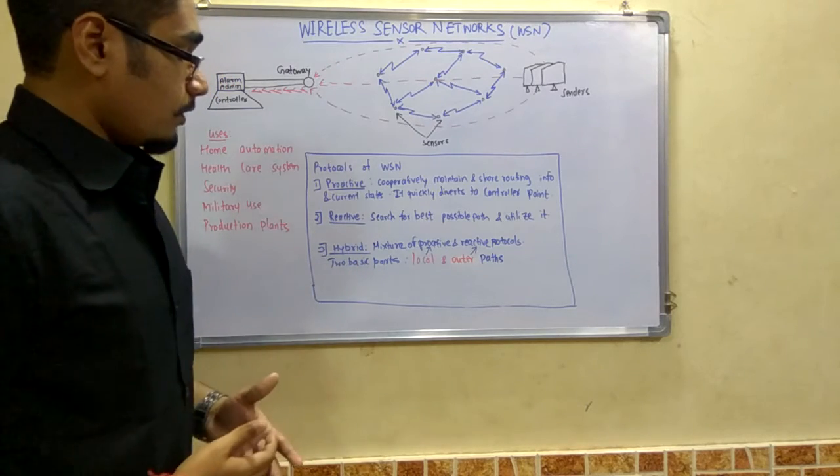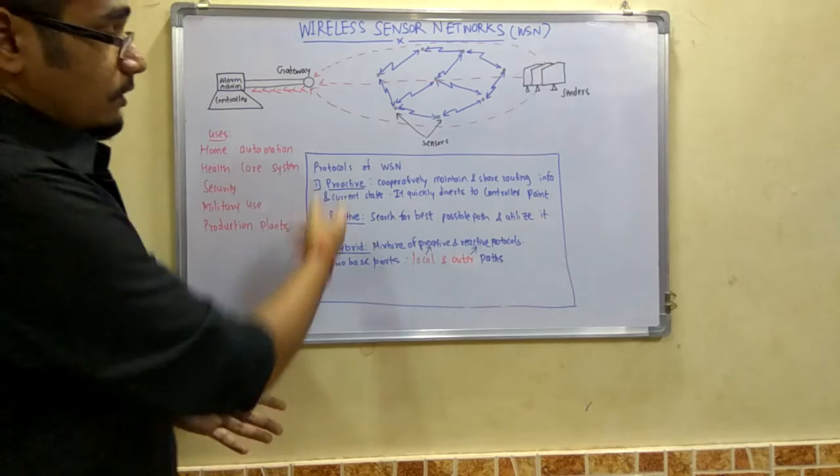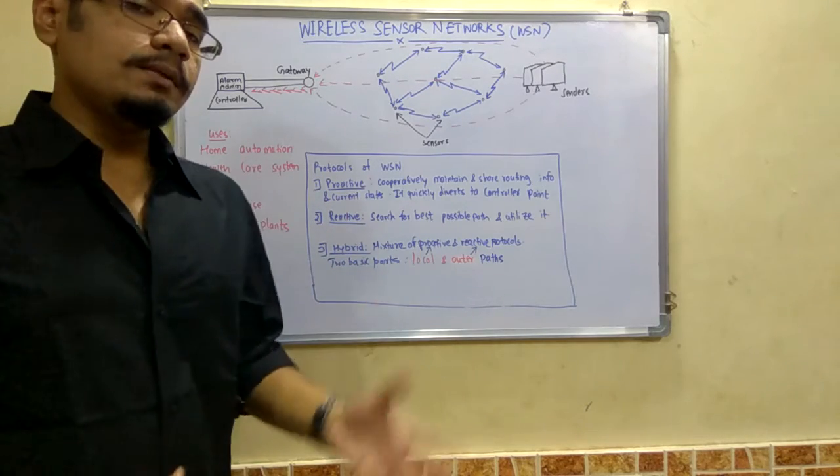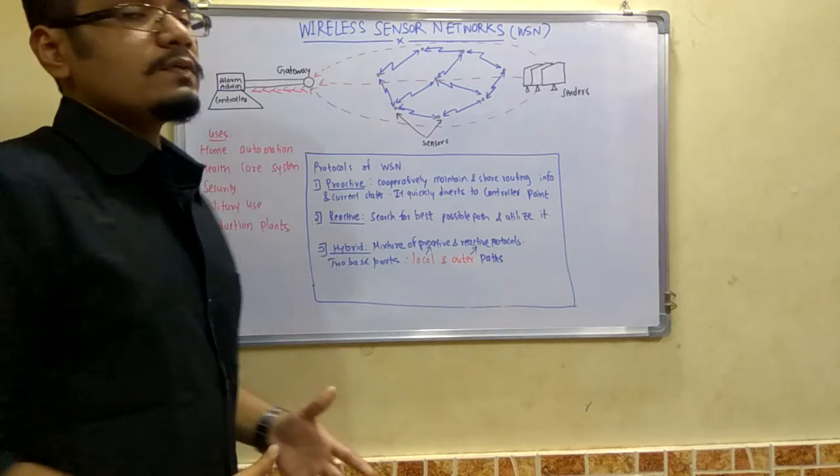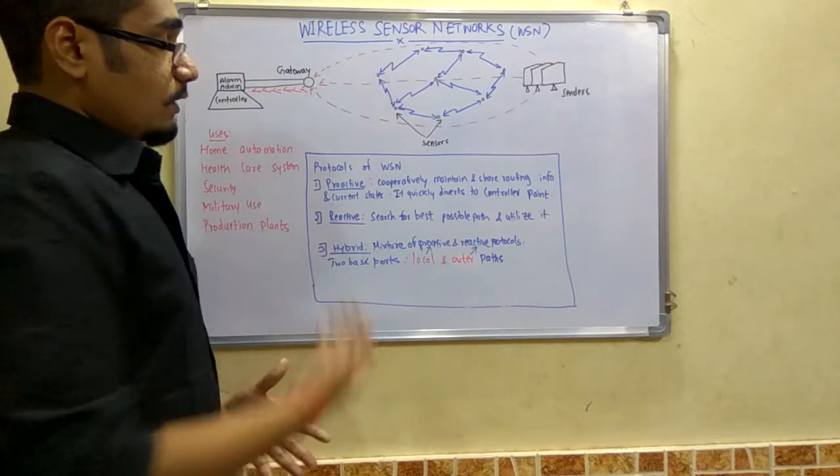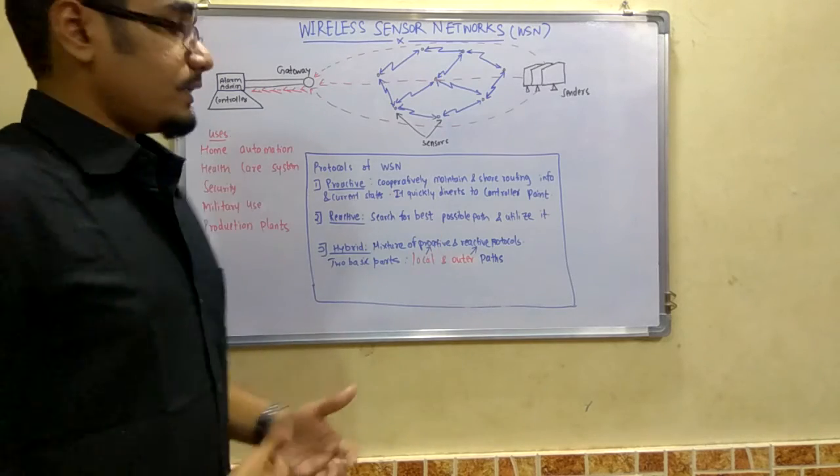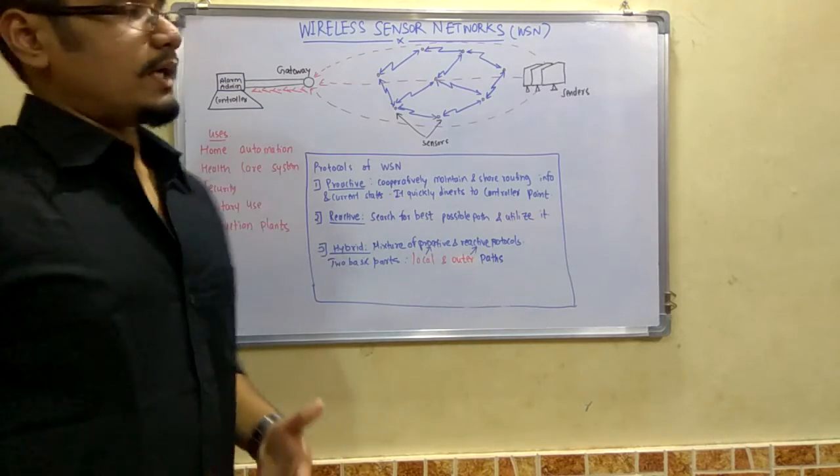Next is the hybrid protocol, which is the mixture of the above two protocols. It has two basic parts: the local as well as the outer paths. The local path uses the proactive and the outer path uses the reactive in case of dynamic strategies.